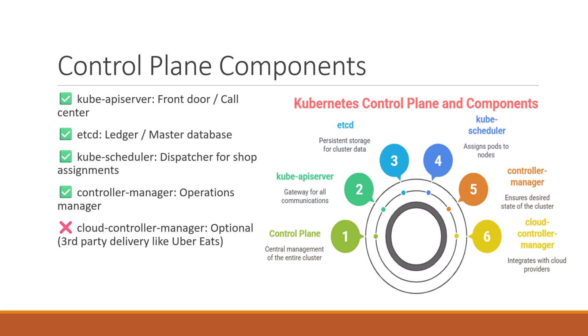Next is the controller manager. This checks the restaurants to make sure everything is running as expected — if something fails, it fixes it. And next is the cloud controller manager, which is optional. It is only used if you are delivering through third-party services like Uber Eats — meaning if you are working with a cloud provider like AWS, Azure, or GCP, this comes into play.